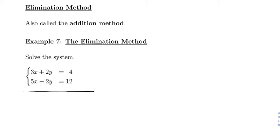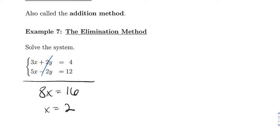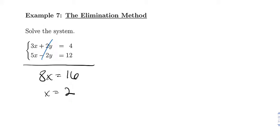Let's see what happens. So if we add them these are going to cancel and then it'll give us 8x equals 16. Divided by 8 and x equals 2.